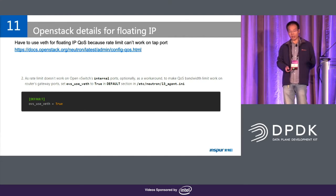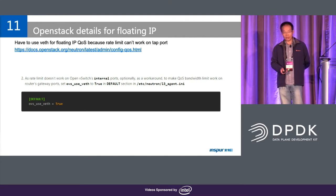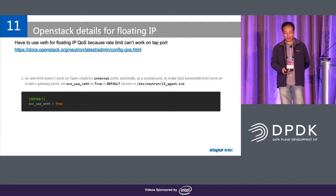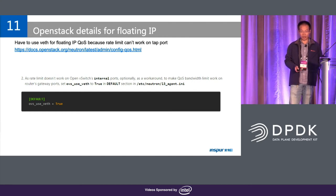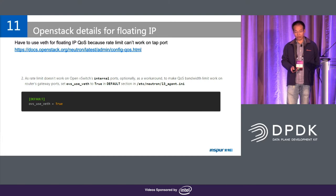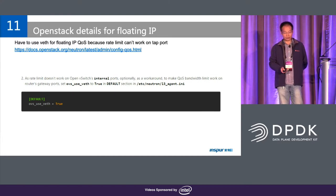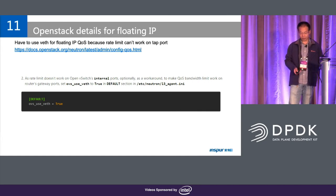Actually, if we enable QoS for floating IP we cannot use TAP, because TAP cannot support it. So we have to use RIS to enable QoS for floating IP.